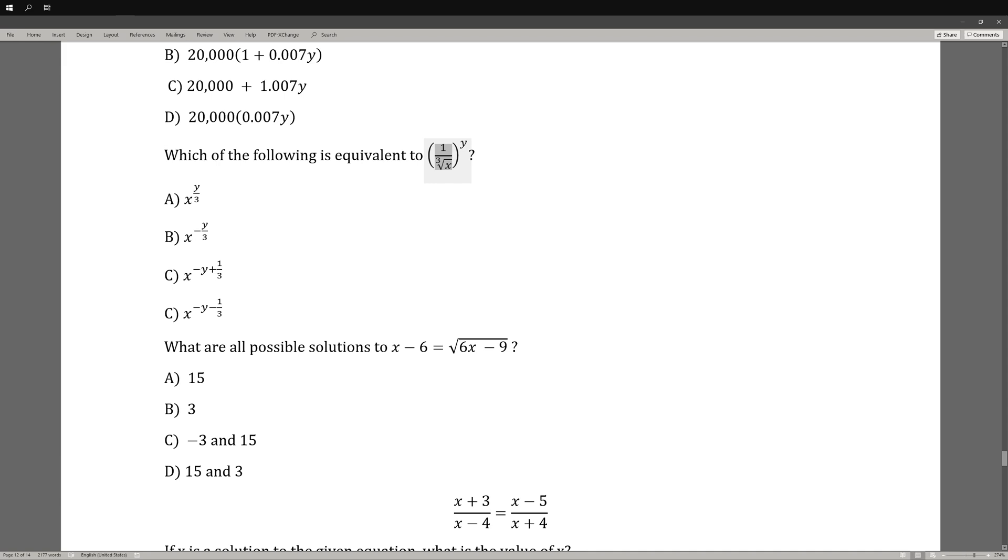The first thing we need to do is rewrite this. We know that radicals would represent a fractional exponent. In this case, we have a cubic root, so this bottom part would be x to the one-third. However, since it's in the denominator, it's going to be a negative exponent, so it's going to be x to the negative one-third, and then we just multiply it by y. So that's going to be B as our final answer.